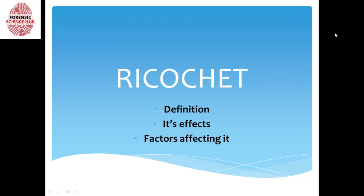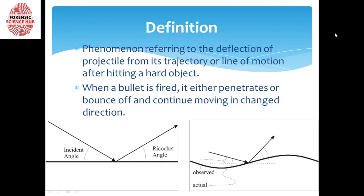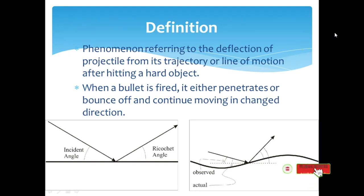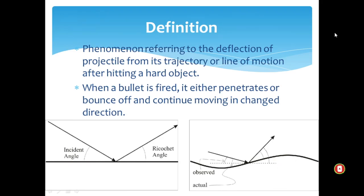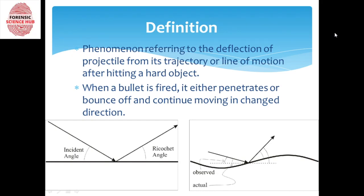Hello everyone, today I will be discussing the topic Ricochet — its definition, effects, and the factors affecting it. Ricochet can be defined as a phenomenon that leads to deflection of a projectile from its trajectory, or the line of motion, after hitting a hard object.